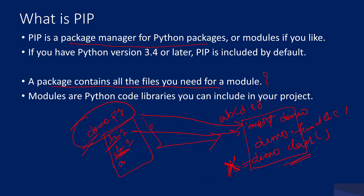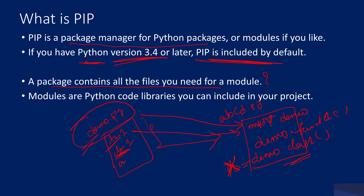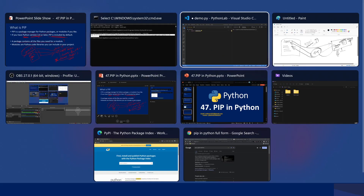If you have Python version 3.4 or higher already installed in your local system, then PIP will be there automatically by default — you don't need to install it separately. If it's not there, you need to navigate to the PIP download URL and install it from there, or search on Google for 'pip download'. We installed Python 3.9 in our starting videos.